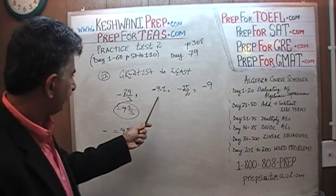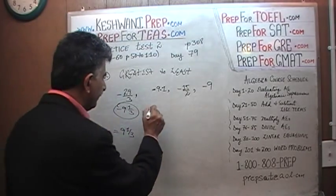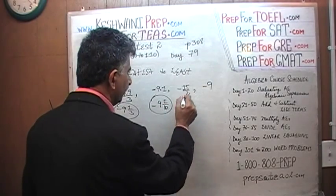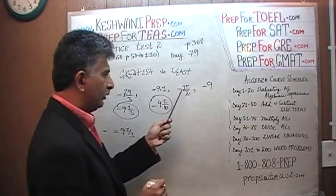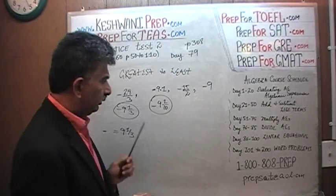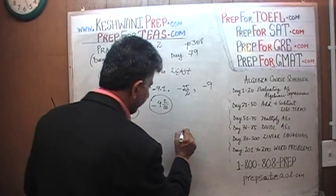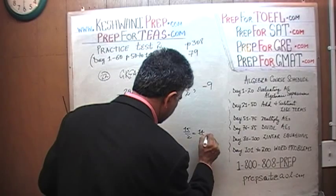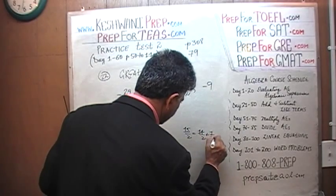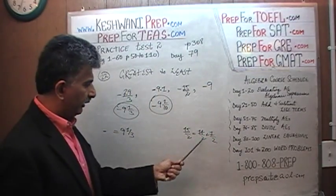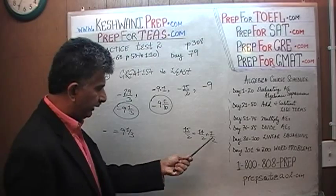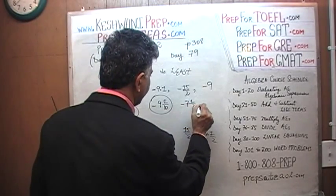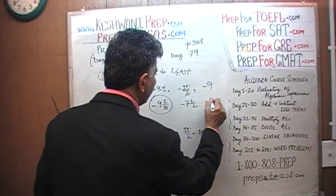Moving on: negative 9.1 is 9 and 0.1, which is 9 and one-tenth, so that is negative 9 and one-tenth. For 15 over 2: 15 over 2 can be written as 14 over 2 plus 1 over 2. 14 divided by 2 is 7, so it's 7 and a half — this is negative 7 and a half. And finally, we have negative 9.